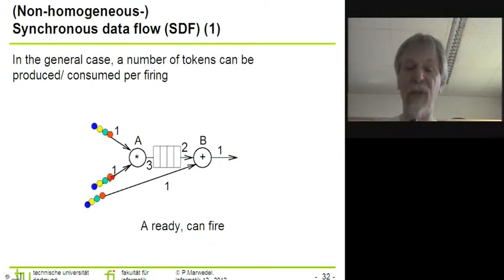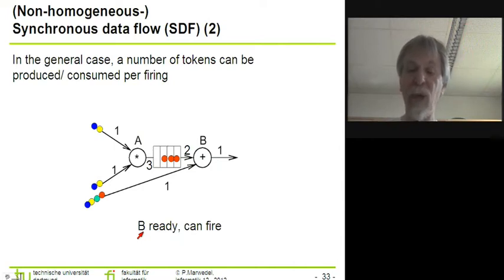In the more general case, we might have numbers different from one on these edges. And that means we might be consuming or producing a number of tokens that's different from one. In the more general case we are seeing an example here. In this situation, A is ready and can fire because there are enough tokens on the incoming edges and there is enough capacity on the outgoing edge. So as a result of A firing, we are coming to a situation where we have three tokens here in this FIFO at the output of A.